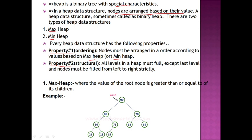For max heap, the parent value is greater. For min heap, the parent value is lesser. So property one is ordering — the values should be arranged in that manner. The second property is that in a max heap or min heap, elements should be filled left to right.